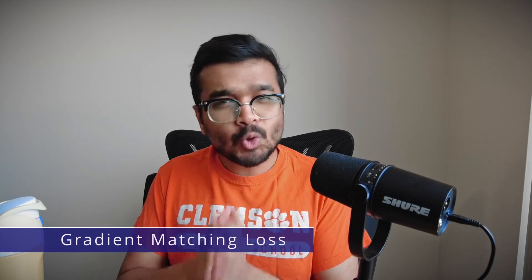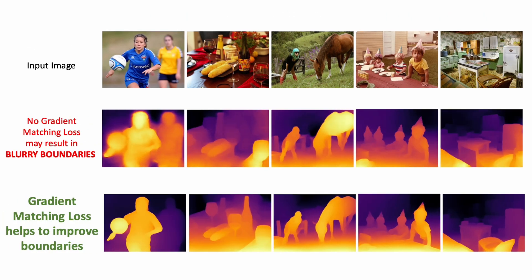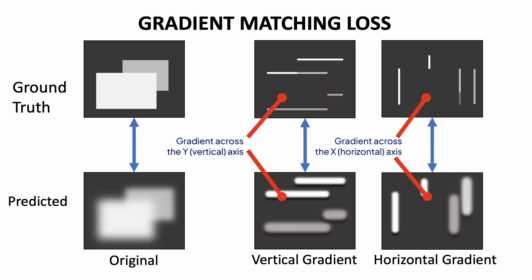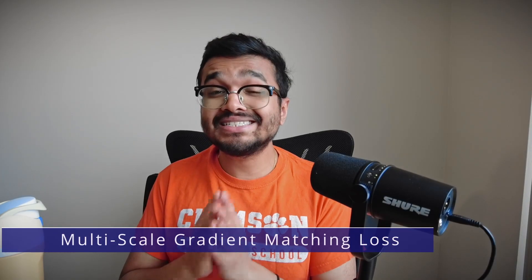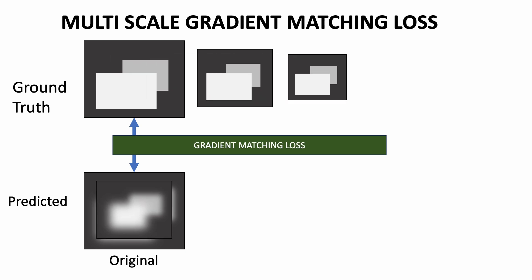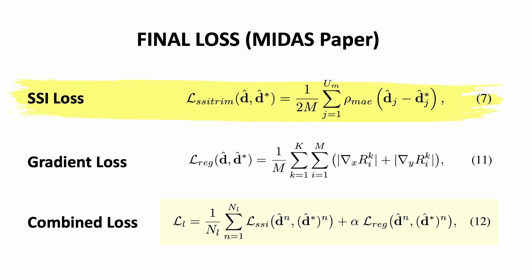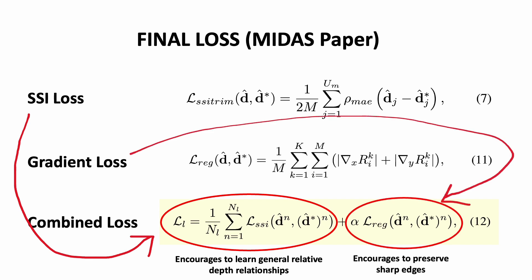The second loss is the gradient matching loss. Using only the scale-shift invariant loss might result in smoothed-out depth maps that fail to capture sharp distinctions between adjacent pixels of different objects. Gradient matching loss helps preserve these details by aligning the gradients of the predicted depth map with those of the ground truth — calculating gradients across the X and Y axes and applying an L1 or L2 loss at the gradient level. MIDAS also uses a multi-scale gradient matching loss with 4 scale levels, down-sampling the depth maps 4 times and calculating the loss at each resolution. The final loss is a weighted sum of the scale-shift invariant loss and the multi-scale gradient matching loss.